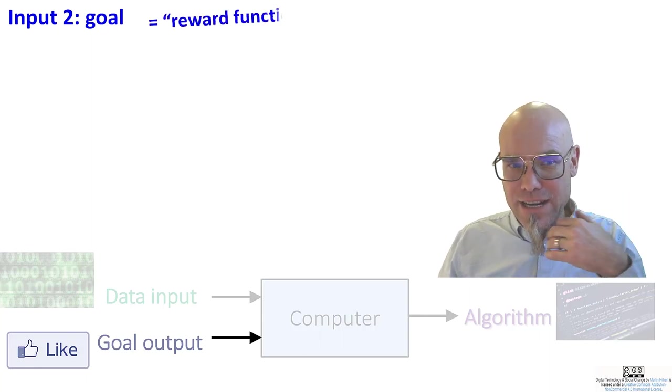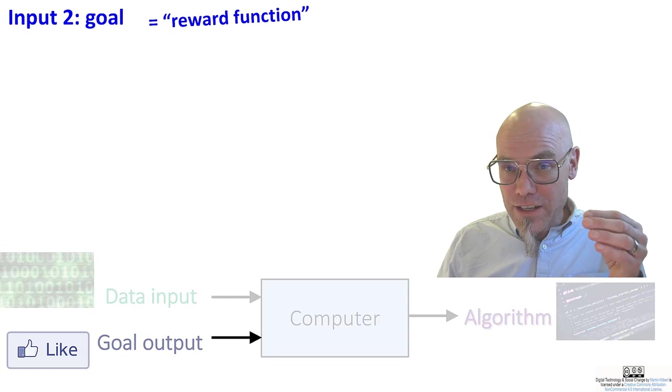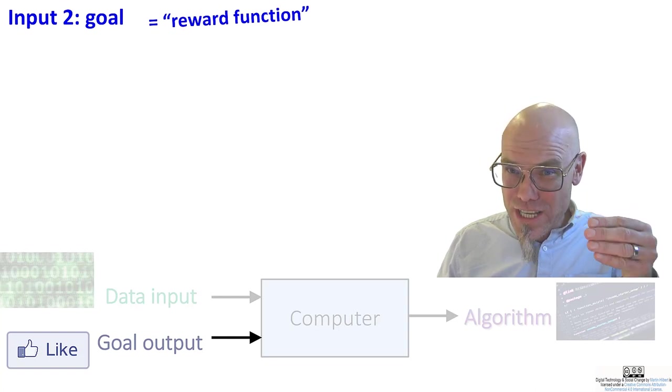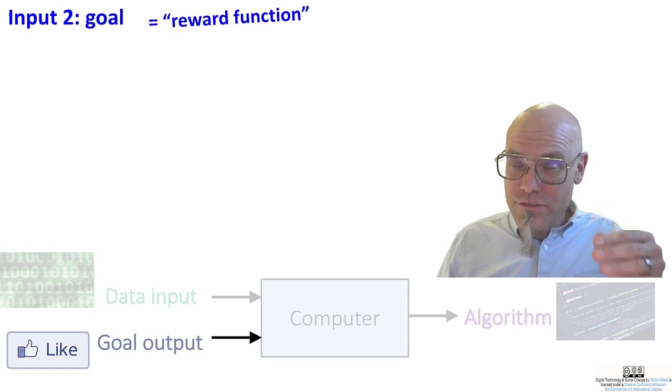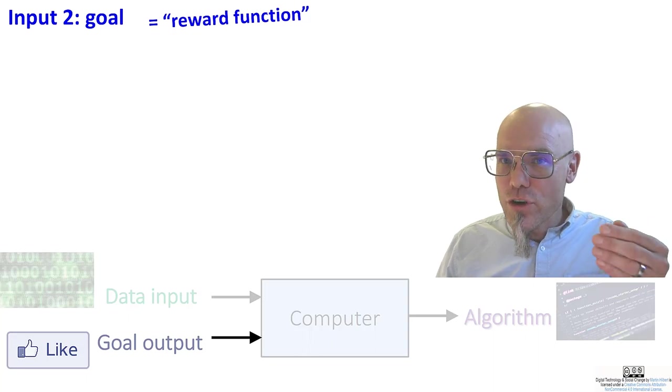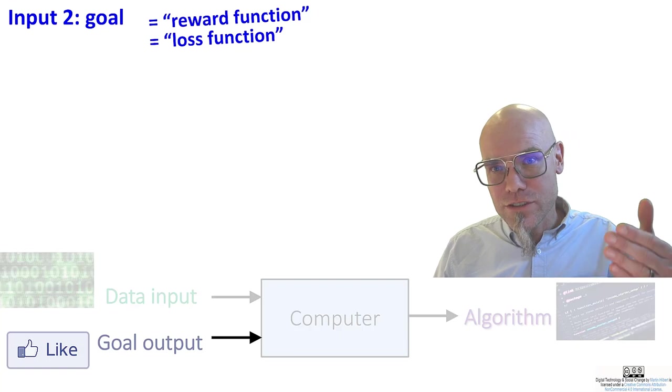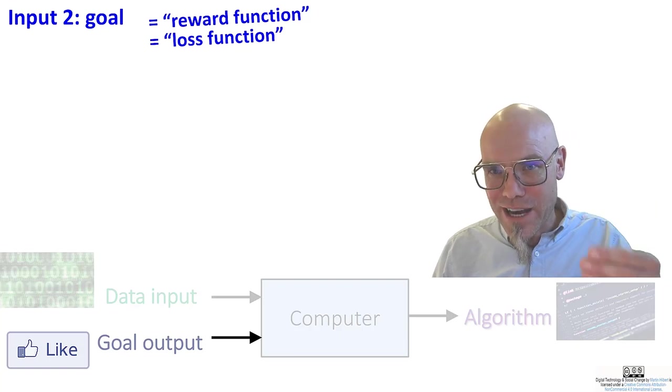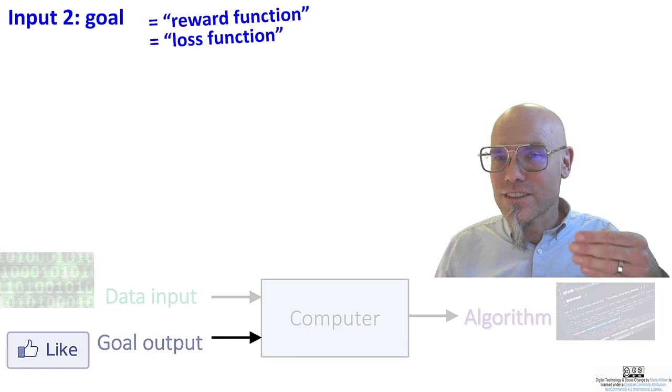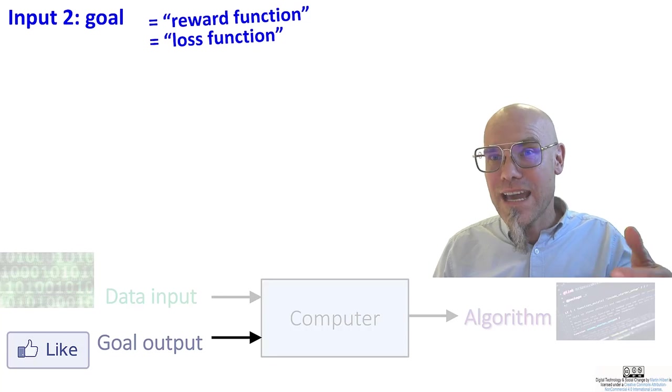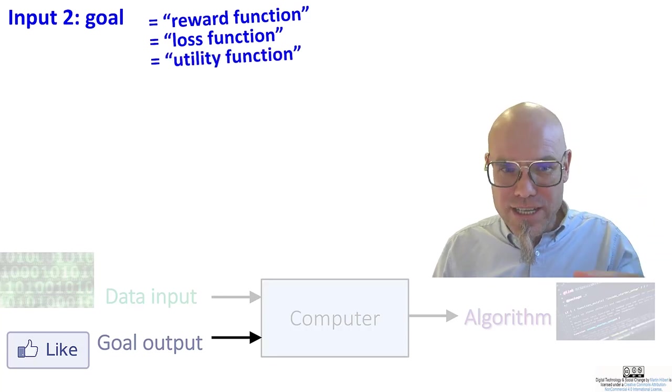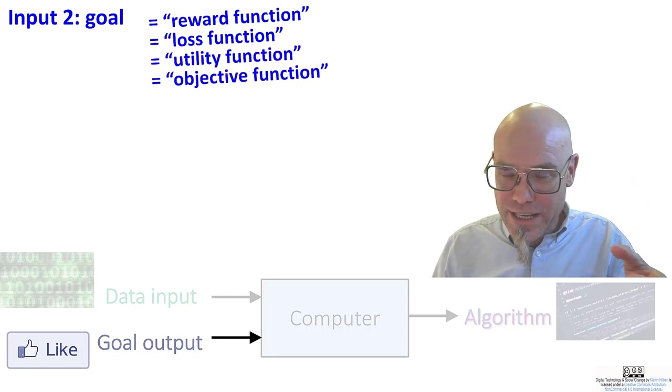And that has different names. It's called the reward function, because you give the machine rewards for fulfilling whatever goal you defined it to fulfill, or a loss function, which is kind of like the same thing. You punish the machine for not going closer to the goal that you gave it, or the utility function and the objective function.